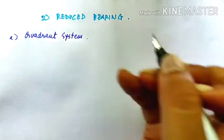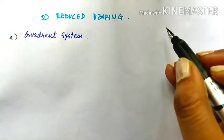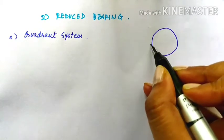Earlier it was circular system. So, what is a quadrant system? It means a circle is divided into four parts.